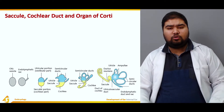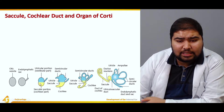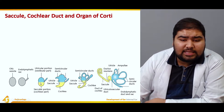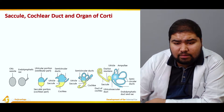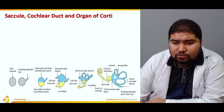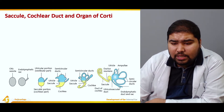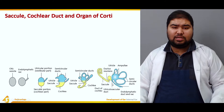Looking at the figure, this is the otic vesicle, which forms the endolymphatic sac. The upper blue portion is the utricular portion, which is the vestibular part. The lower yellow portion is the saccular portion. We can see the utricle, the semicircular ducts forming, and the cochlea. The saccule is also visible. The structures seen include the ductus reunions, the utricle, the ampullae, the semicircular canals, the endolymphatic sac and duct, the saccule, and the utriculo-saccular ducts — this is how the development actually takes place.